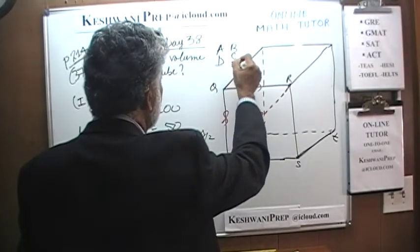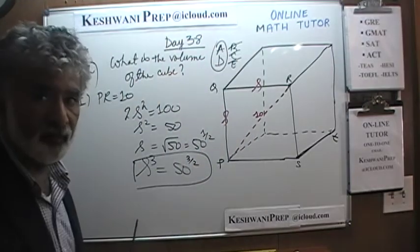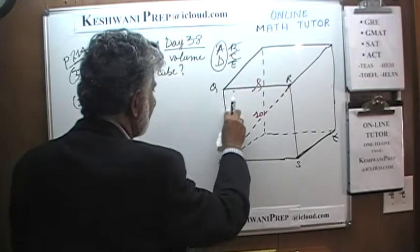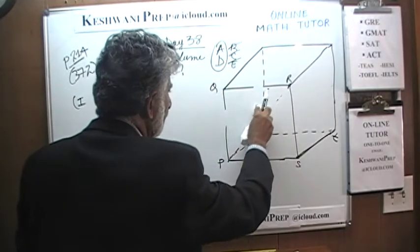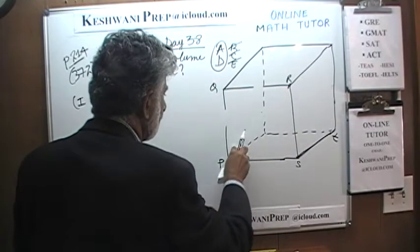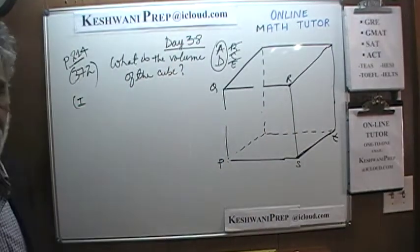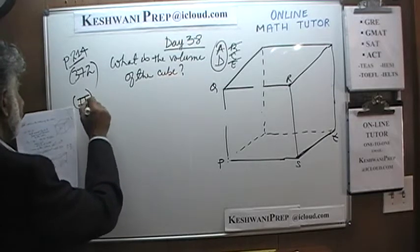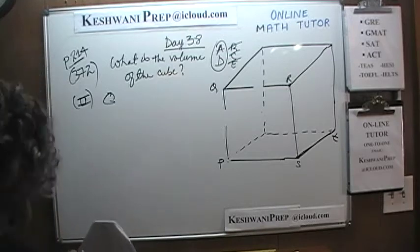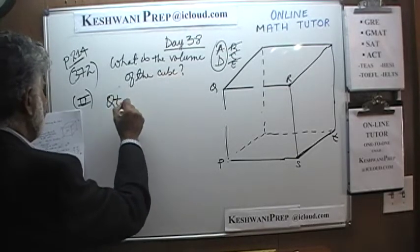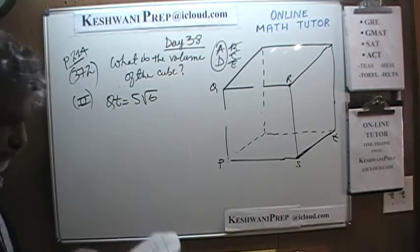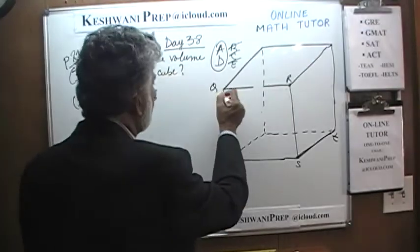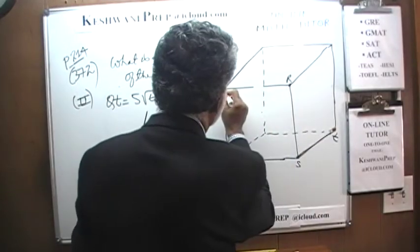Let's look at what the second statement tells us. When we look at the second statement, we must delete our memory — press the delete button. We cannot use any information from the first statement. Second statement tells us that Q to T is 5 root 6. Let's find out where it is — this is right here.